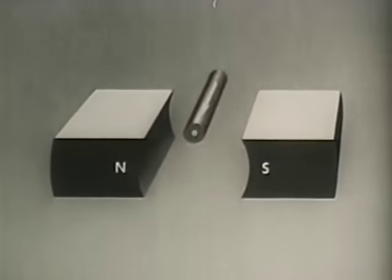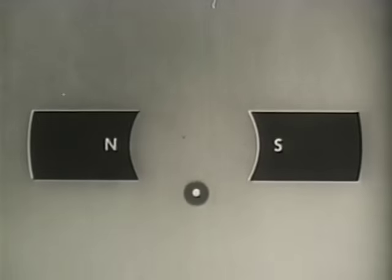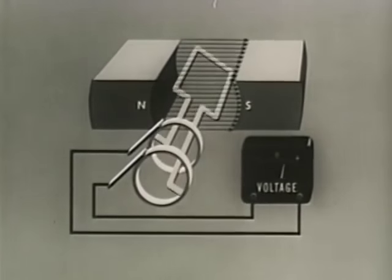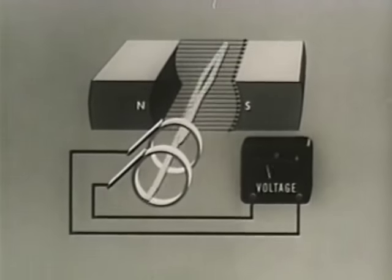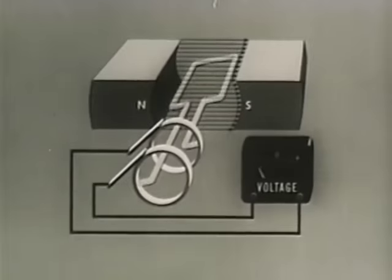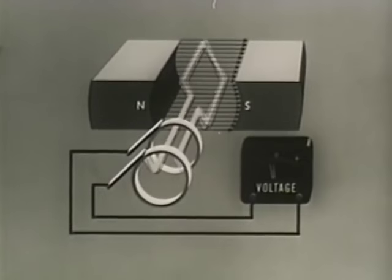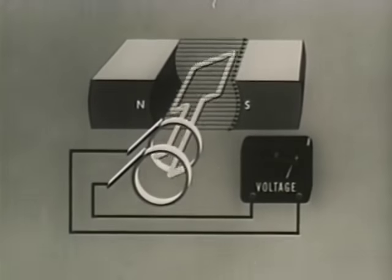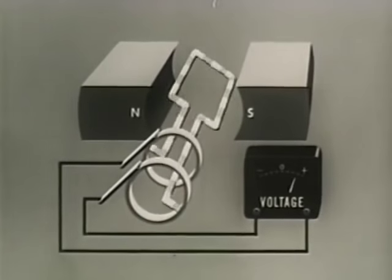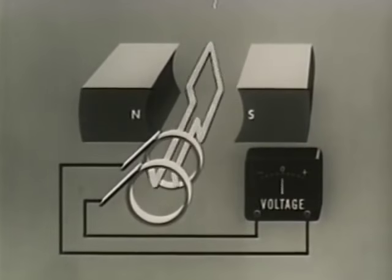Moving a conductor in and out of the field in a straight reciprocal fashion is awkward and impractical. A simple generator of EMF can also be made by rotating a single-turn coil within a stationary magnetic field of two magnets with opposite polarity. The loop becomes, in effect, two conductors because both the top and bottom sections cut magnetic lines during rotation. Since they cut lines of force of opposite directions as they rotate, EMFs of opposite polarity will be generated in the conductors.